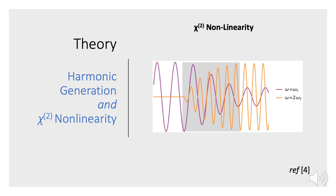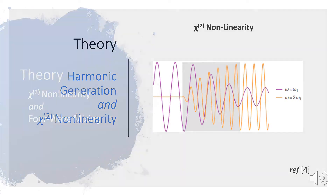Here's an animation of this unfolding. A frequency of omega-1 comes in and frequency omega-2 — that's twice omega-1 — is generated at the output.